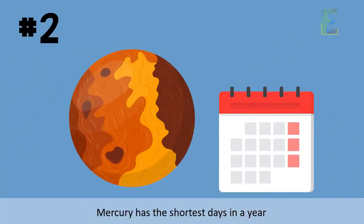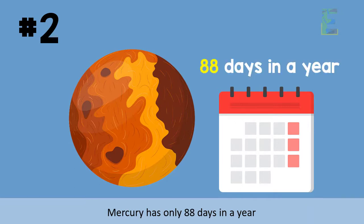Number 2. Mercury has the shortest days in a year. Mercury has only 88 days in a year.